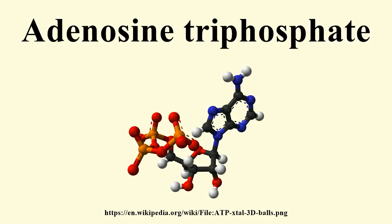The ATP concentration inside the cell is typically 1 to 10 mM. ATP can be produced by redox reactions using simple and complex sugars or lipids as an energy source. For complex fuels to be synthesized into ATP, they first need to be broken down into smaller, more simple molecules. Carbohydrates are hydrolyzed into simple sugars, such as glucose and fructose. Fats are metabolized to give fatty acids and glycerol.